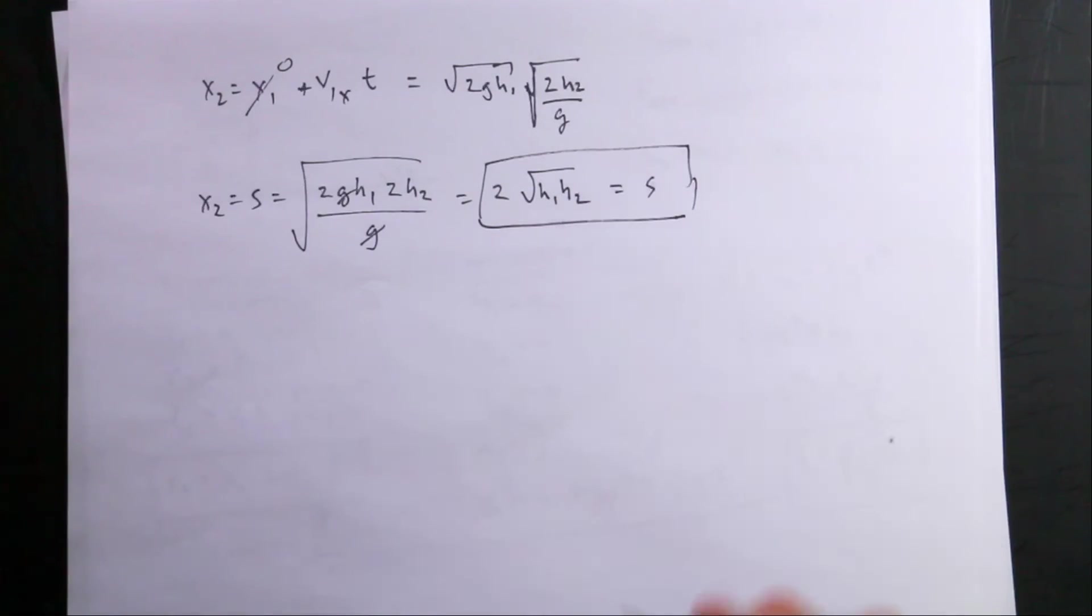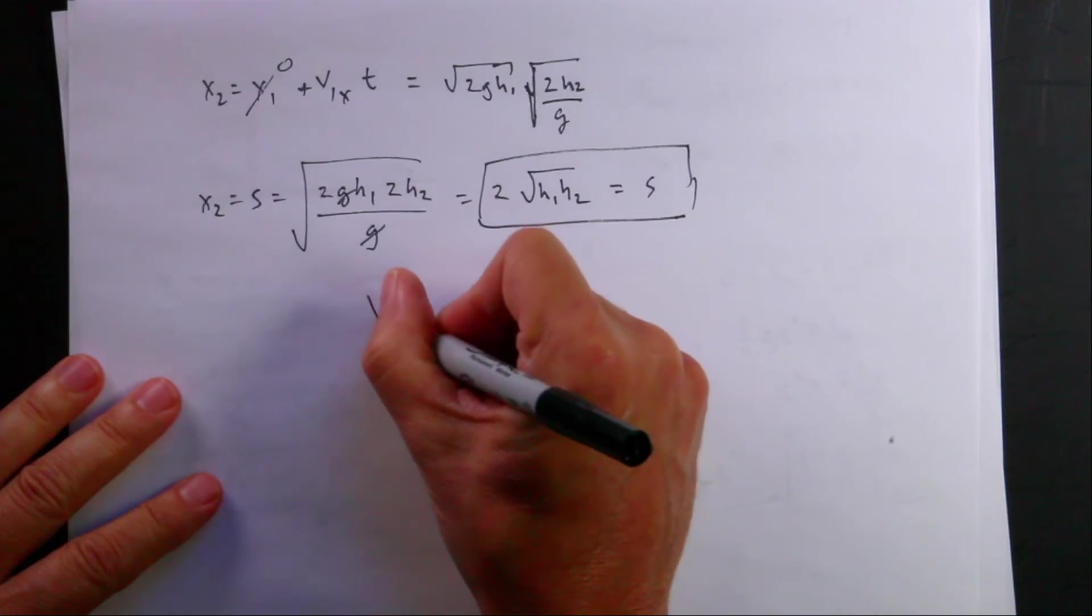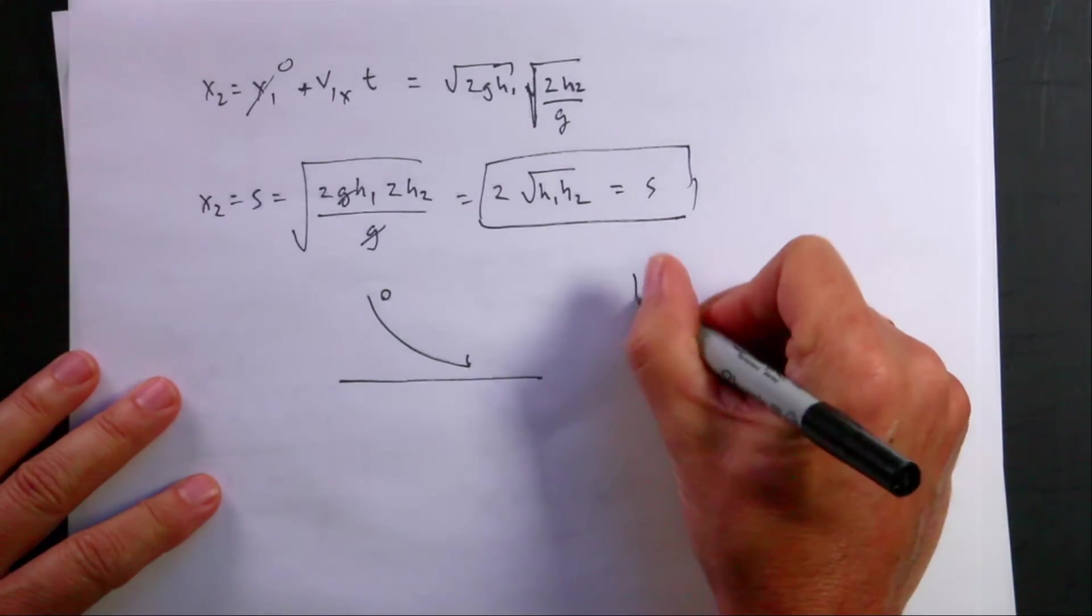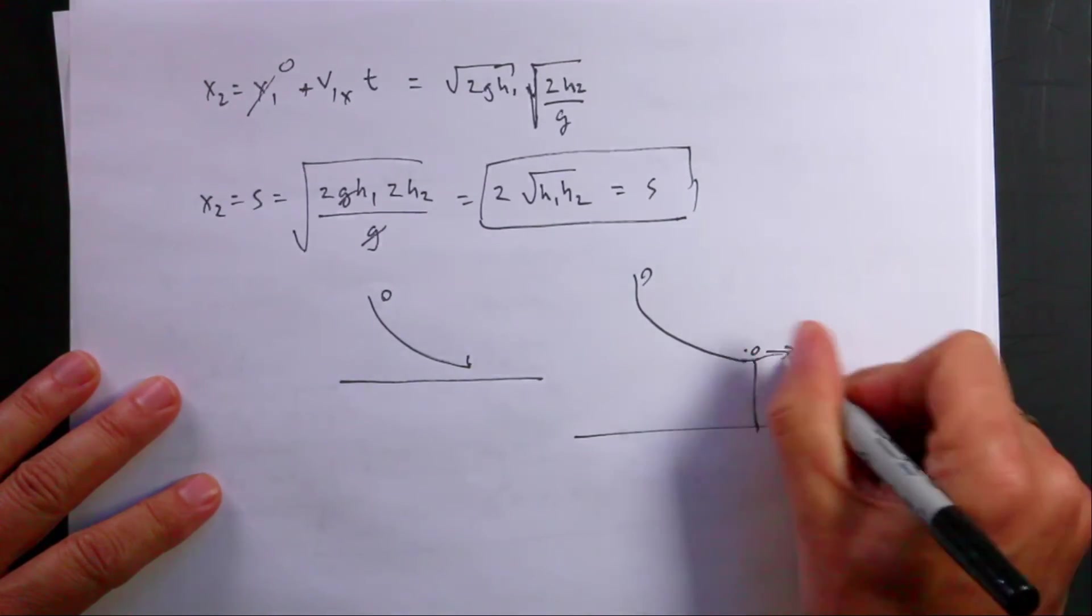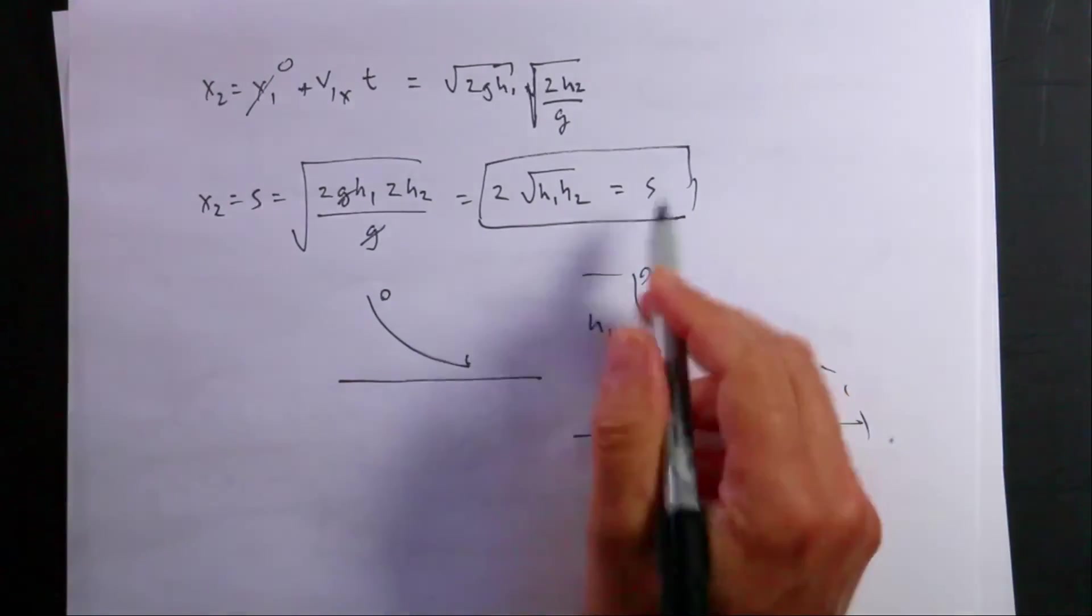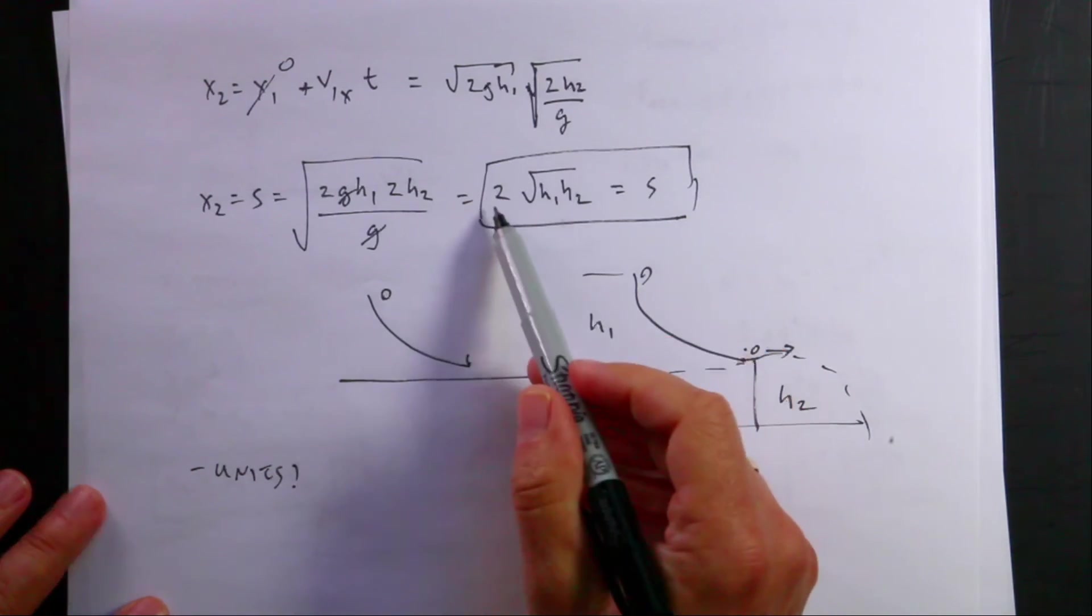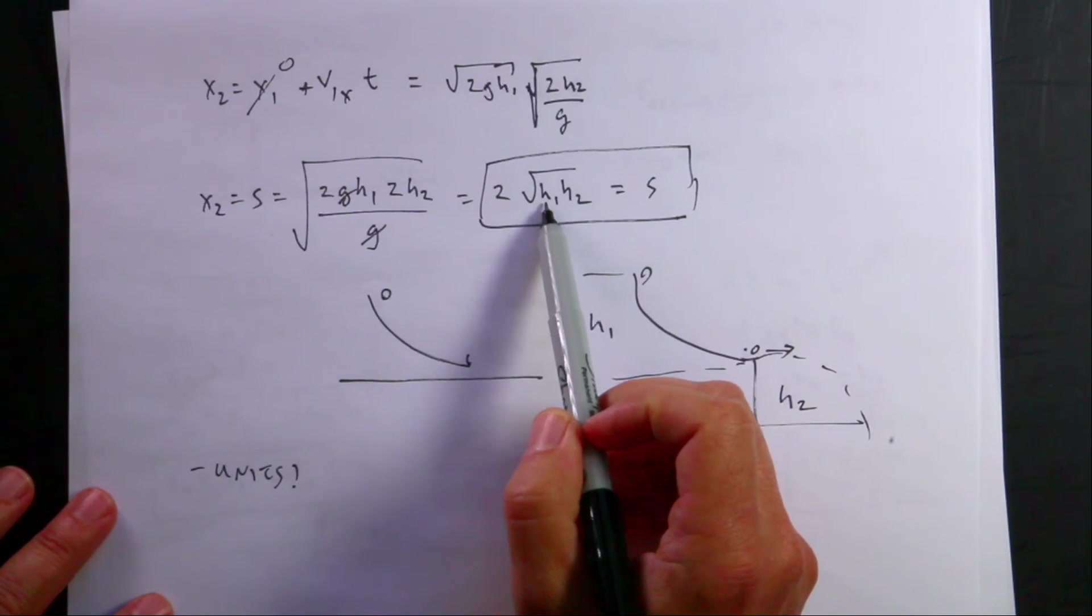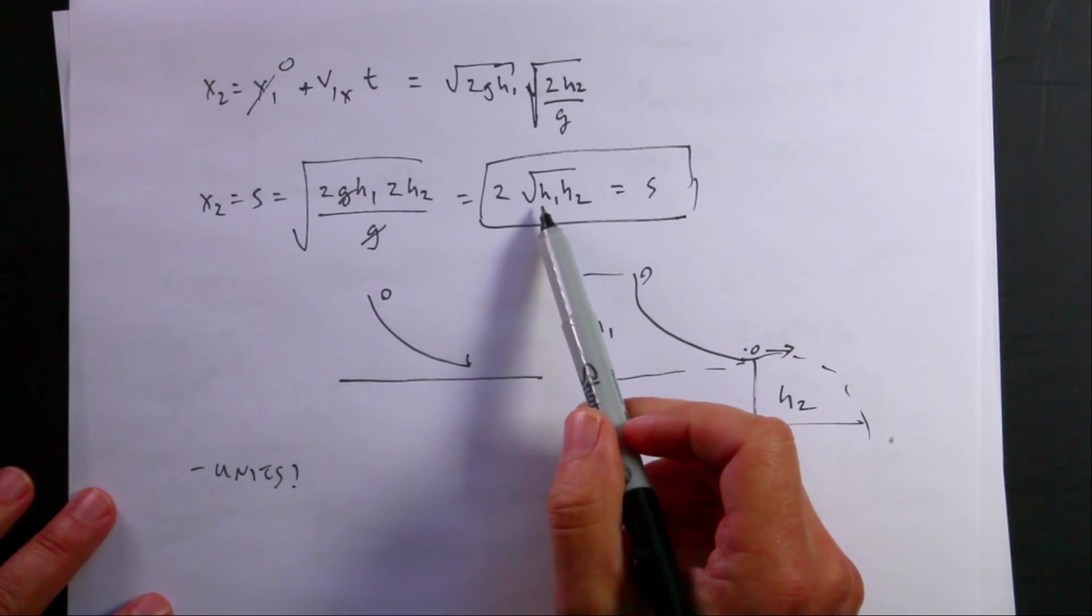Okay, so let's just kind of make sense of this and make sure that things are going okay. So what if, let me draw my picture. Okay, so we call this h1 and this h2. So first, does it have the right units? Well, so 2 has no units in this case because it came from that 2 factors of 1 half. h1 is in meters. This is in meters. So I get meters squared. I take the square root and I get meters. So it does have the right units.